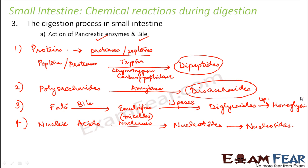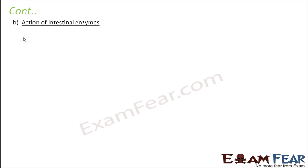The products obtained at this stage are dipeptides, disaccharides, nucleosides, and monoglycerides. In the next step, the intestinal enzymes — secreted by cells in the mucosal layer of the intestine, like the brush border cells — also act on these products and break them down further into the most simplest absorbable forms. That is when we say complete digestion has taken place. Please remember the products of the action of pancreatic enzymes, as we will now discuss the action of intestinal enzymes.